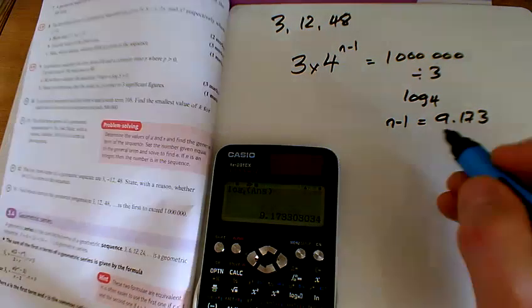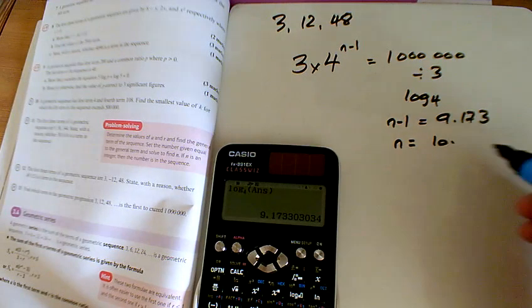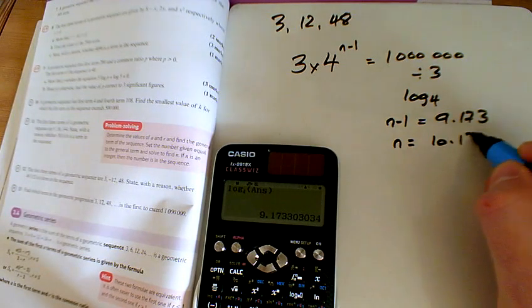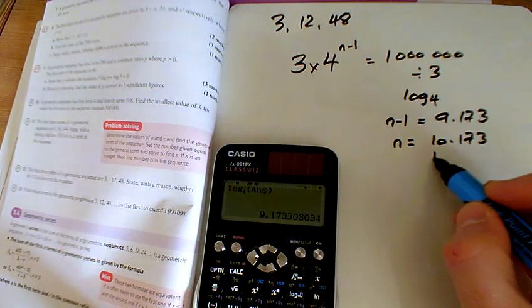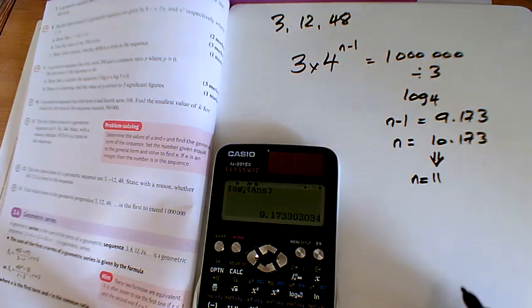And so the first one that's over, so n is 10.173. And so that tells me that the first one that's over a million is going to be the 11th one.